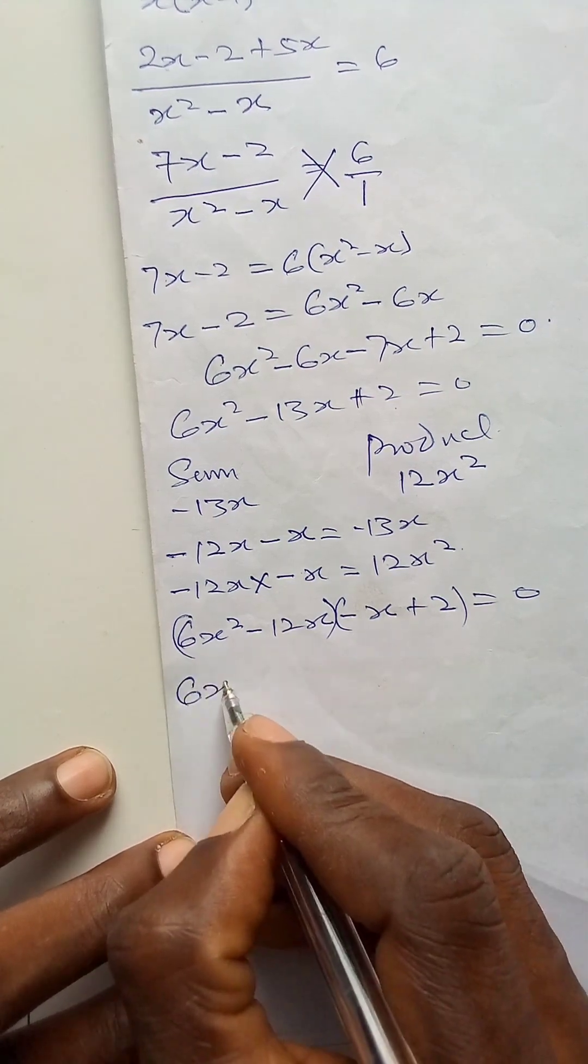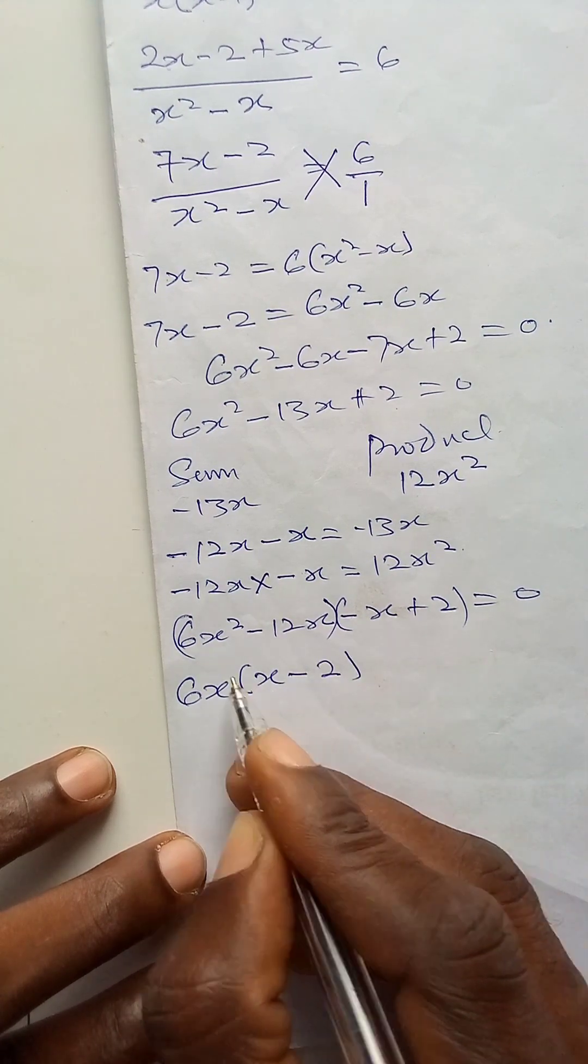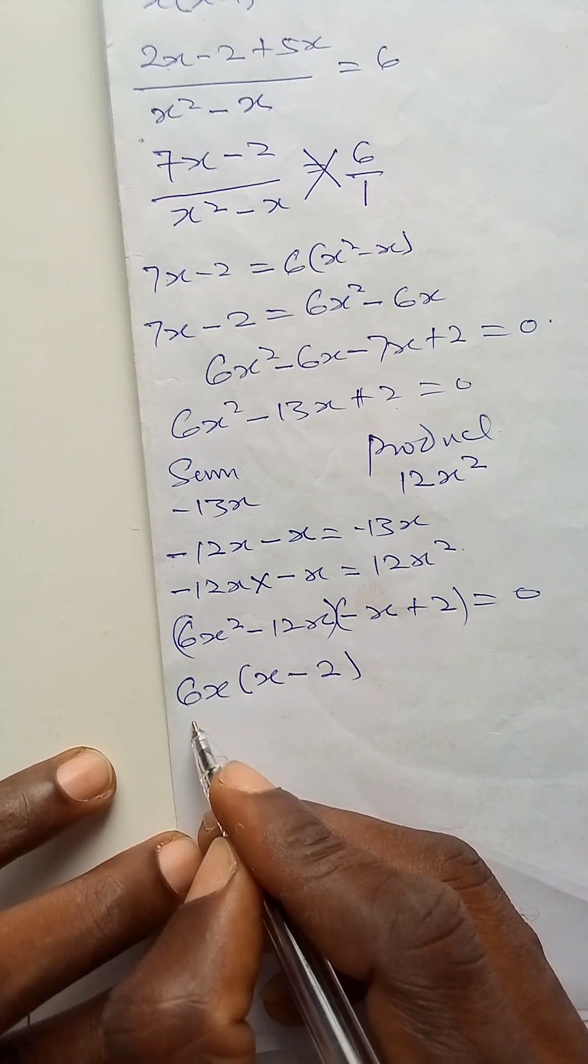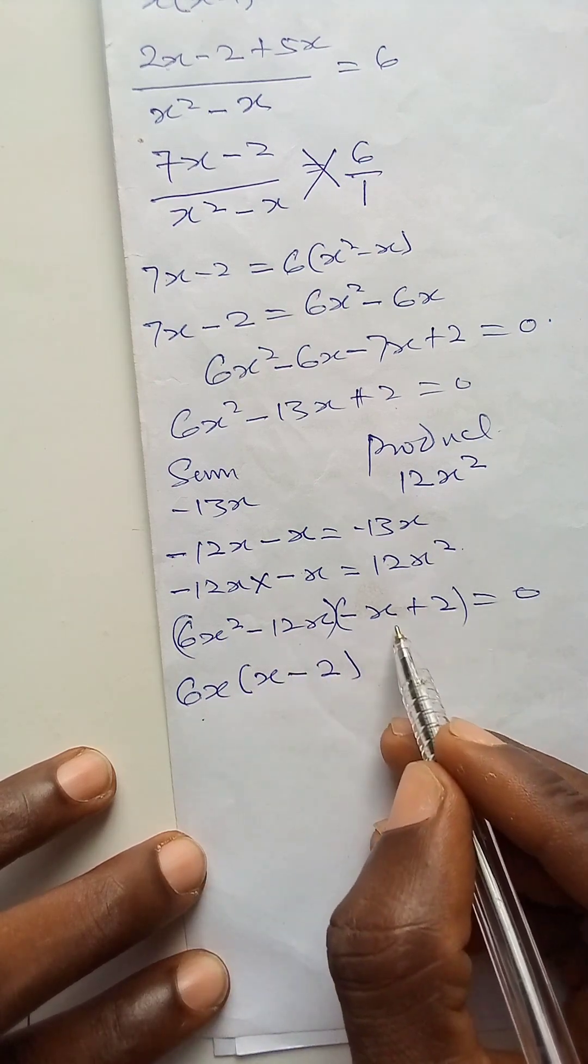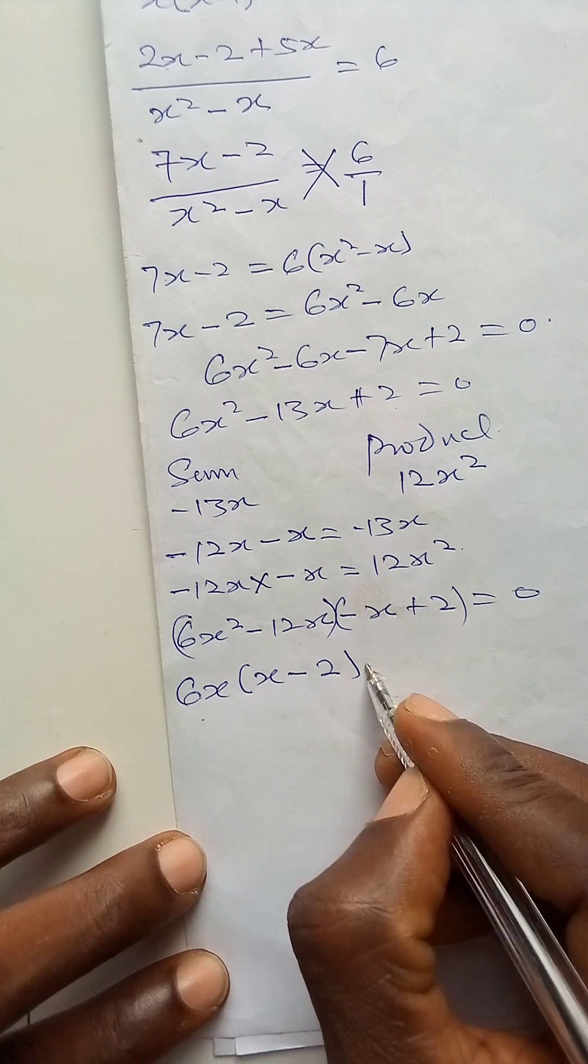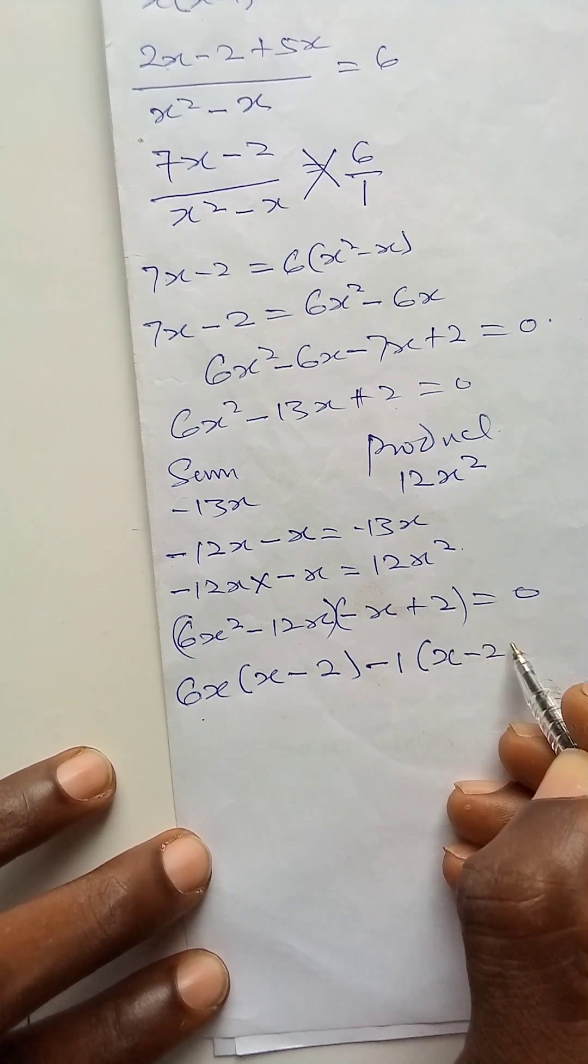I will bring out the 6x remaining x minus 2, because 6x times x will give me 6x squared and 6x times minus 2 will give me minus 12x. And in the second bracket, the common factor is minus 1. I will bring that minus 1 out and I have x minus 2.